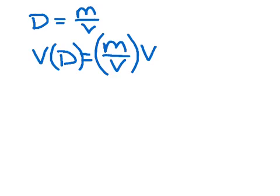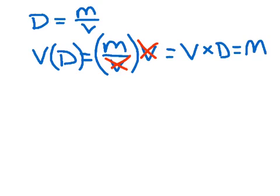What that does is if I look here, volume gets cancelled out over here because it's on the top and on the bottom. It doesn't get cancelled out on the other side, so what that means is volume times density is equal to mass. That's my second one.